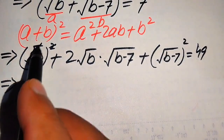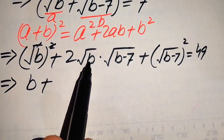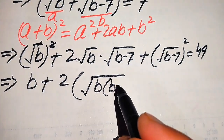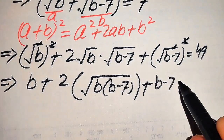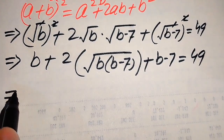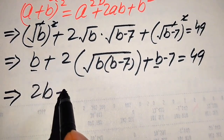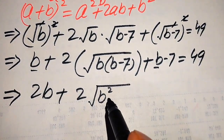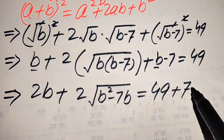In the next step, the squares cancel the square roots, and we get: b plus 2 times square root of b(b−7) plus b minus 7 equals 49. We combine the square root of the two terms to get 2·√(b(b−7)), which equals √(b²−7b). We move minus 7 to the right hand side and it becomes 49 plus 7.